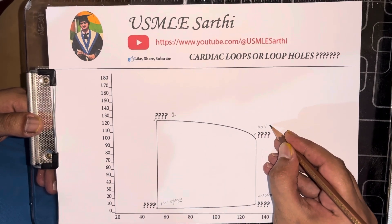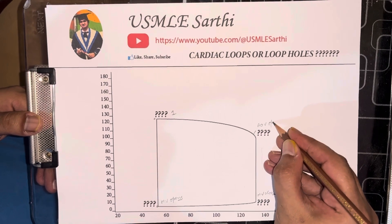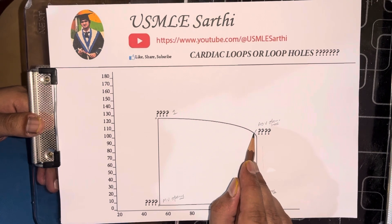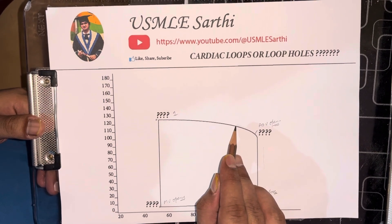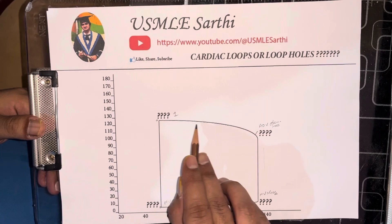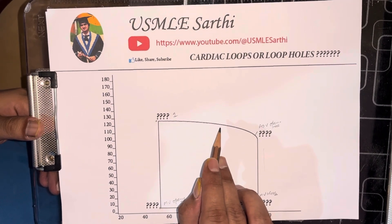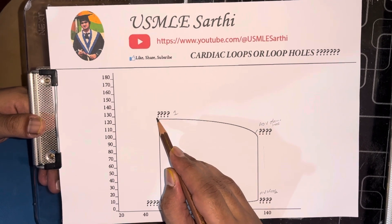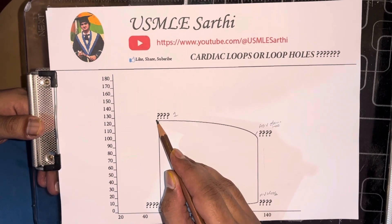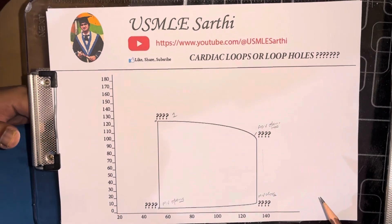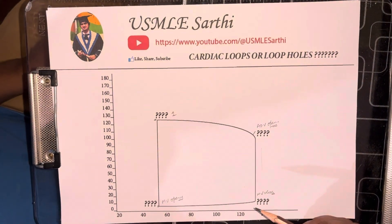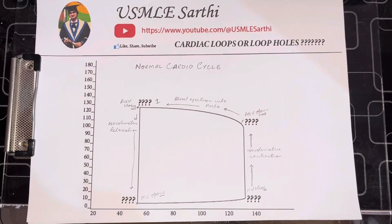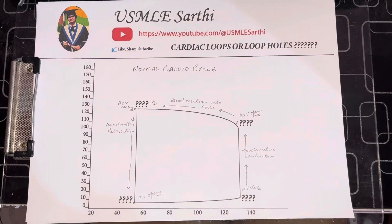From this point your left ventricle starts to eject blood into the aorta. This whole process continues — your ventricle is pumping blood into the aorta — until it reaches the point when your aortic valve closes. That is the normal physiology and the normal curve. This is the labeled diagram that I am leaving for you to review later. Thank you.